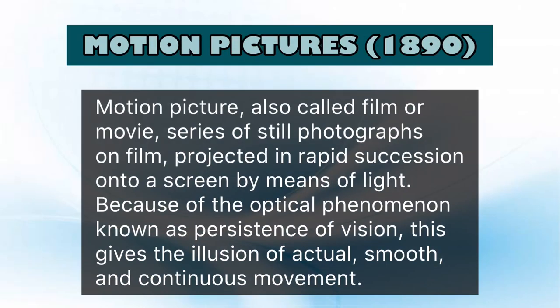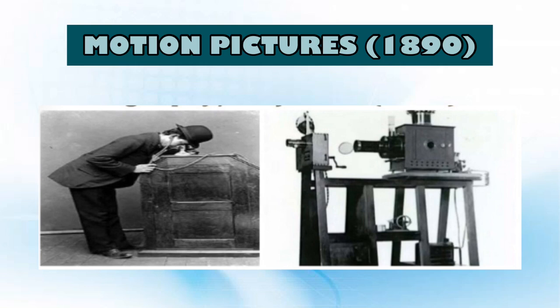Next, we have motion pictures. The history of film technology traces the development of moving pictures from the end of the 19th century to the present. Motion pictures were initially exhibited as a fairground novelty and developed into one of the most important tools of communication and entertainment in the 20th century. Major developments included synchronized sound, color film, and digital technologies replacing physical film stock with digital image sensors and projectors.